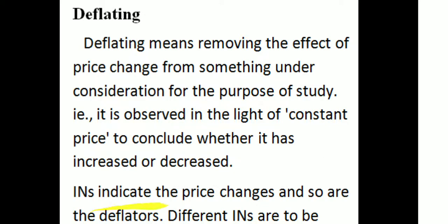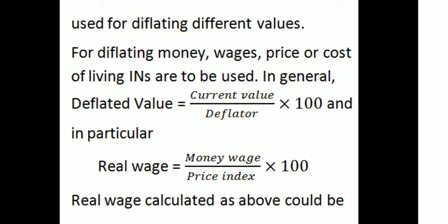Index numbers indicate the price changes and so are the deflectors. Index numbers are to be used under deflecting different values. For deflecting money wages, price or cost of living, index numbers are to be used. In general, deflected value equals current value divided by deflector, into 100.